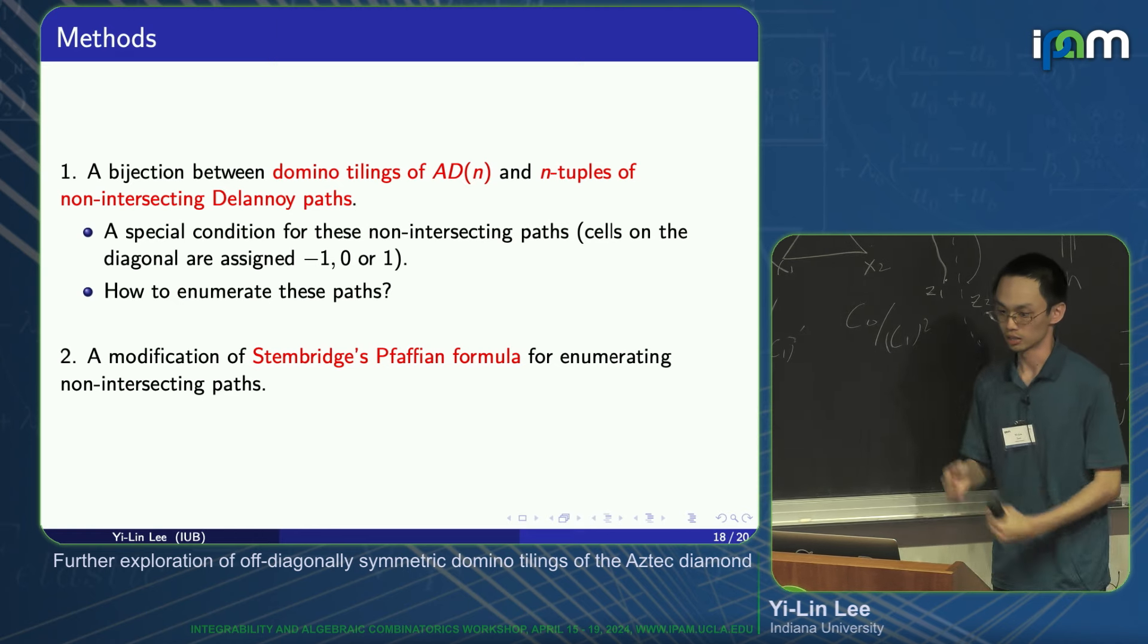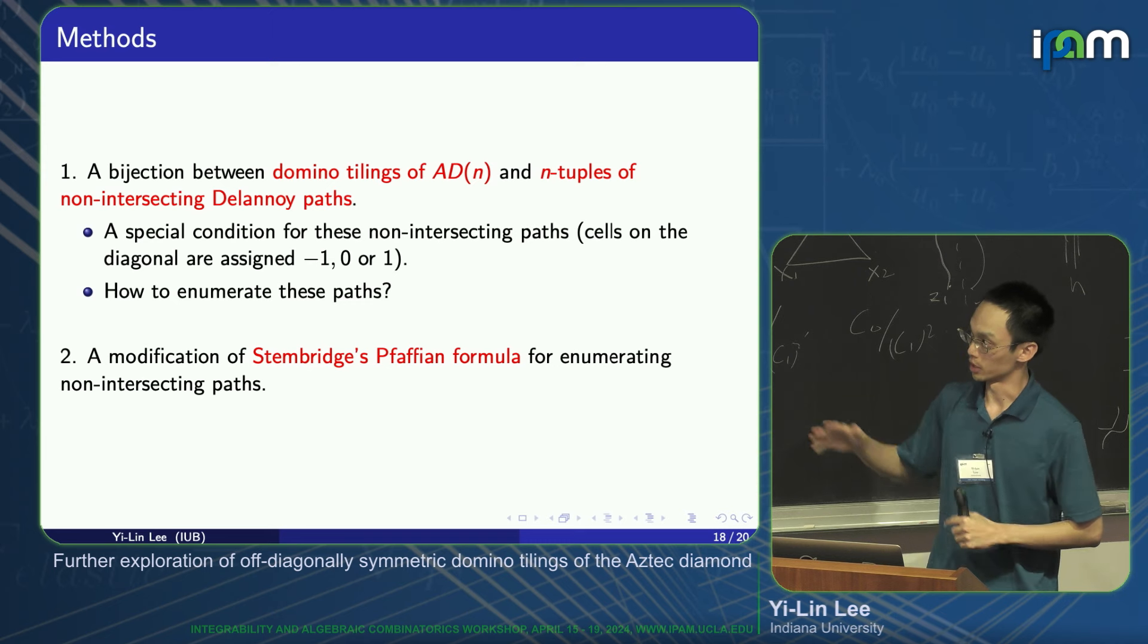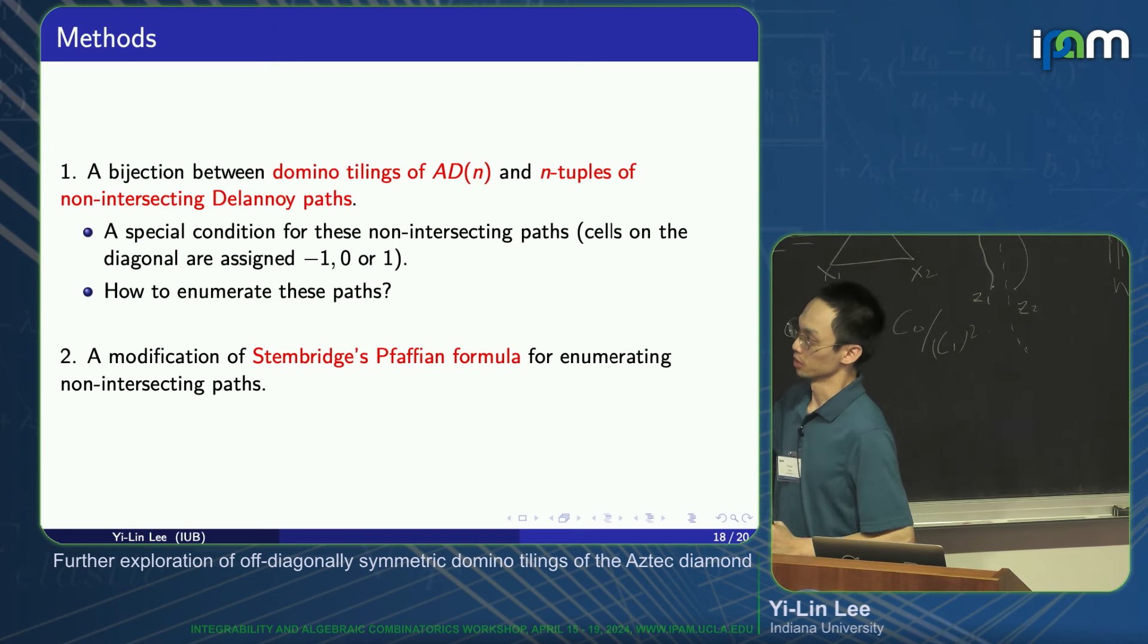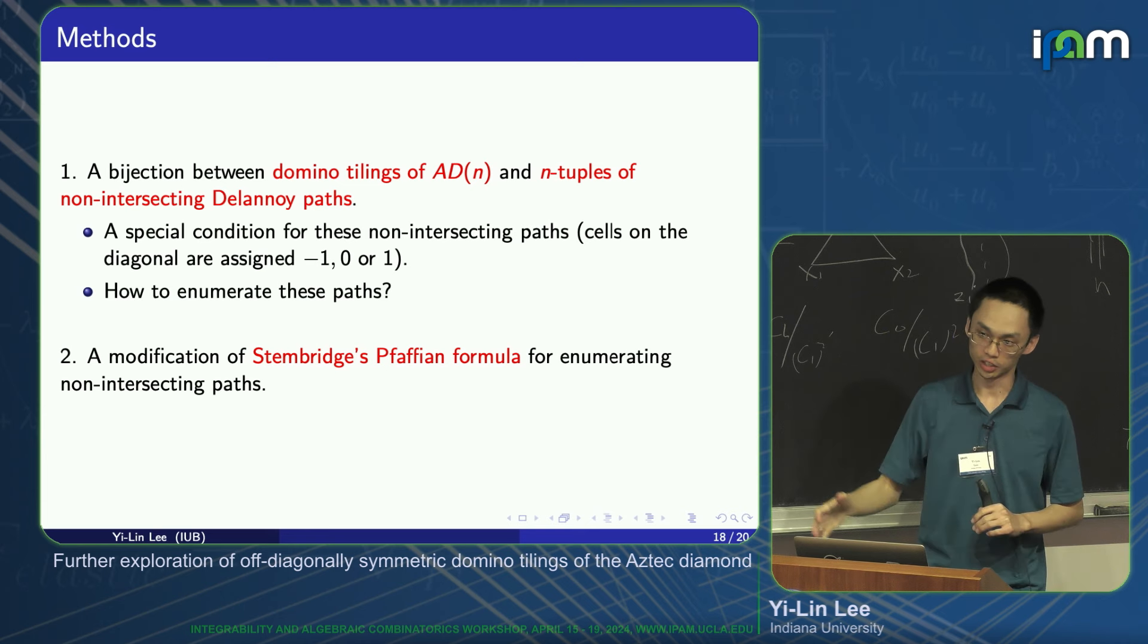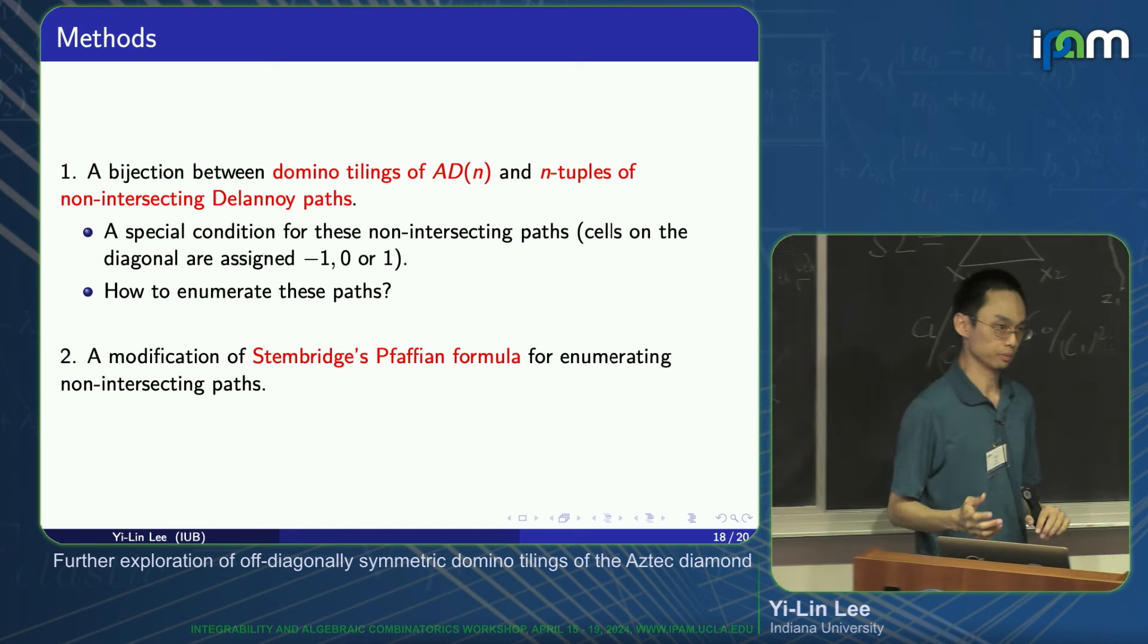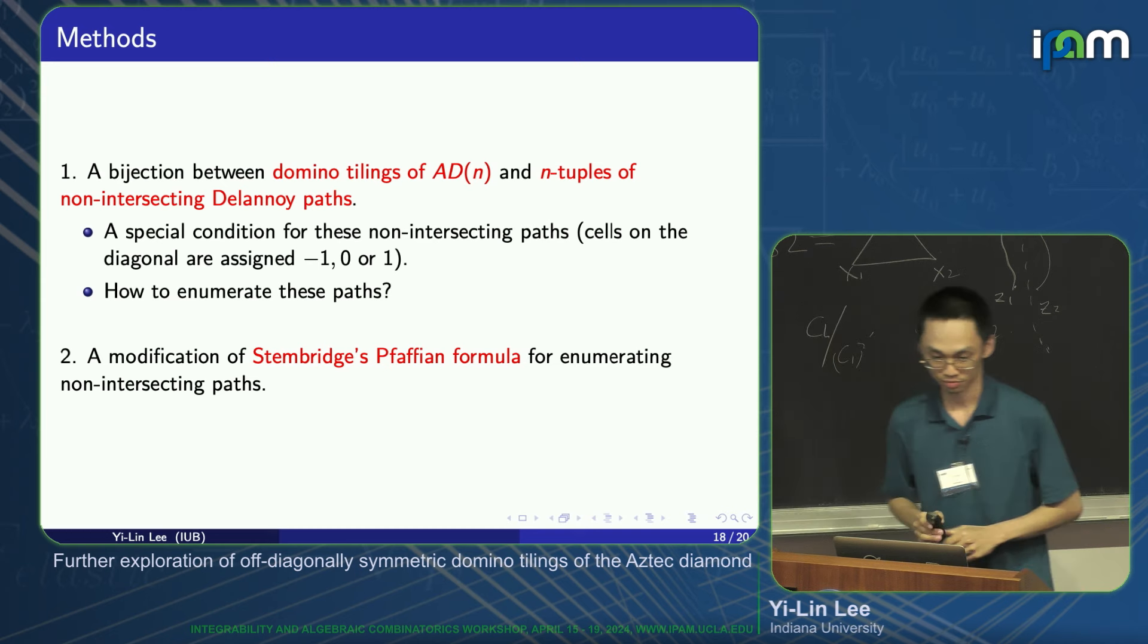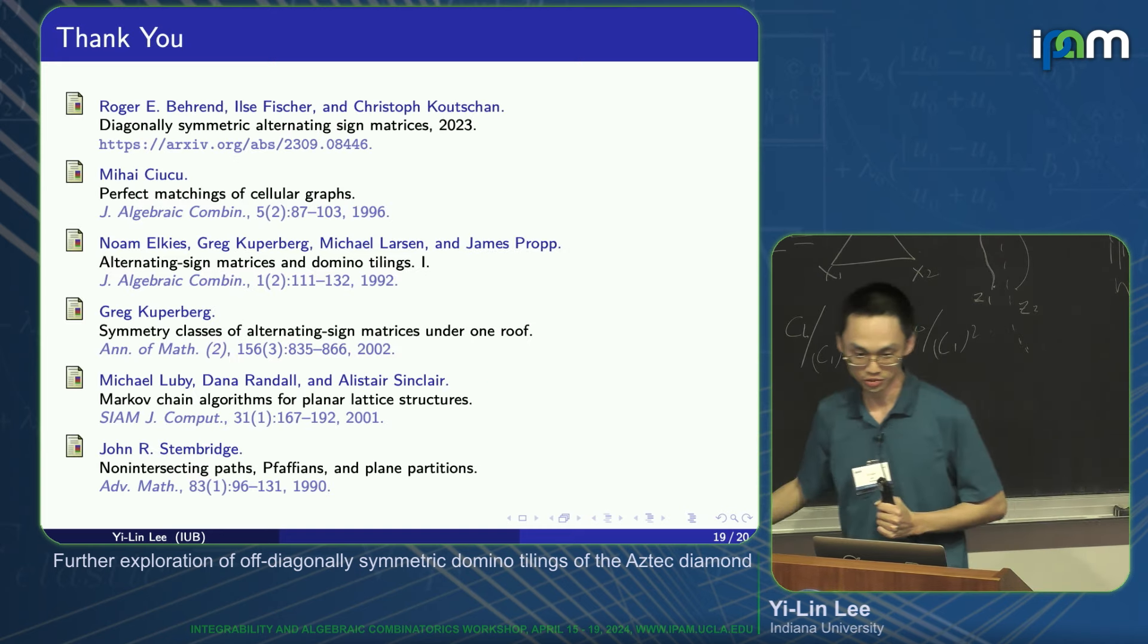I have time, so let's talk about our method. The idea behind it is basically the Lindstrom bijection between tilings and non-intersecting lattice paths. But because of this off-diagonal symmetry condition, the cells on the diagonal have three possible assignments: either negative one, zero, or one. We have to put those special conditions into those non-intersecting lattice paths. Basically, we just turn the tiling enumeration problem into lattice paths enumeration problem. How to enumerate those paths is using Stembridge's Pfaffian formula, but our main contribution is to do some modifications so that it works for our special condition. That's basically the very rough idea behind it. These are the references, and thank you so much.